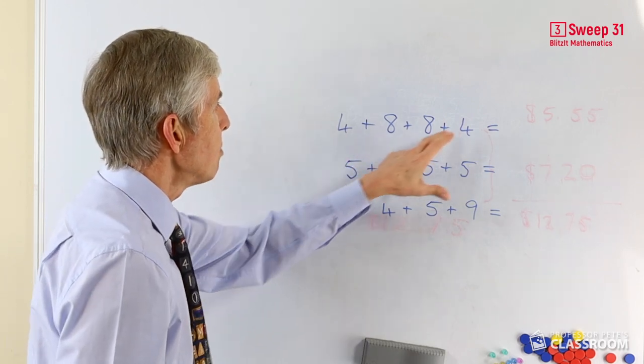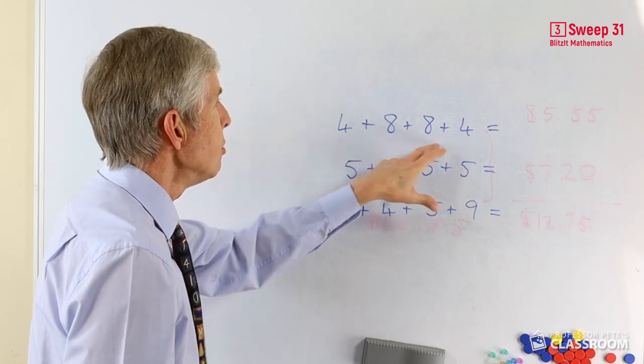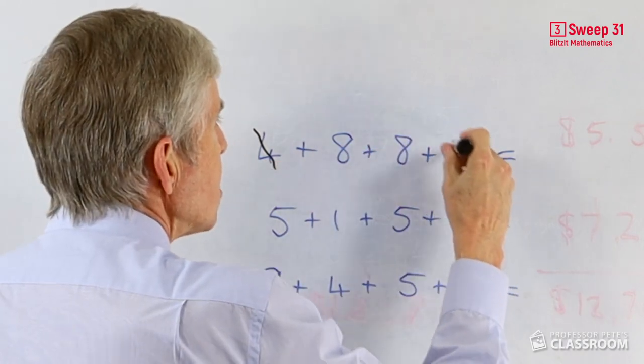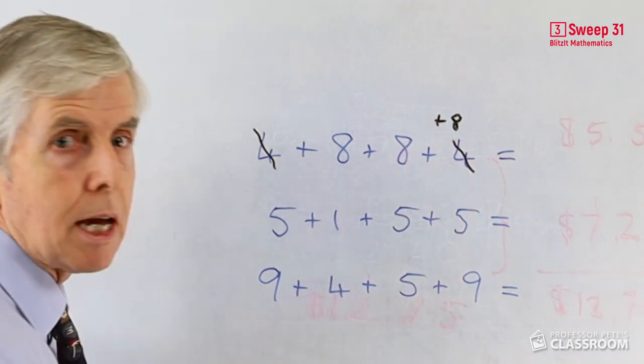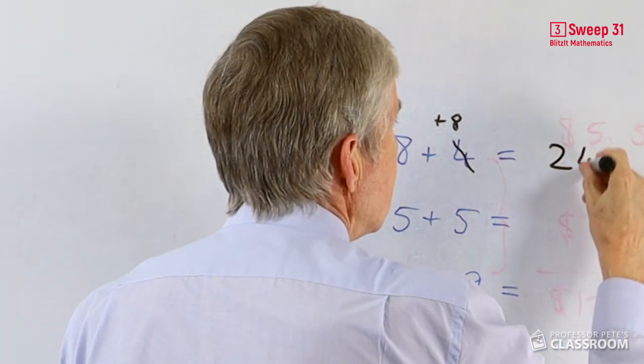4 plus 8 plus 8 plus 4. We've got two eights and the two fours will make another eight, so if we're going to need some written notation, if students need that, we'll cross out the two fours and write plus 8. Now we have three eights, which of course is a multiplication—in fact, three eights are 24.